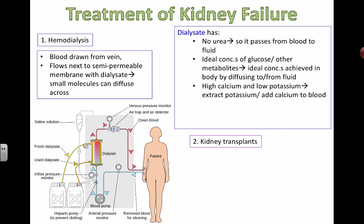The dialysate has high calcium and low potassium. The low potassium concentration means potassium will leave the blood and enter the dialysate down its concentration gradient. The high calcium means calcium will flow from the dialysate into the blood, also down its concentration gradient.